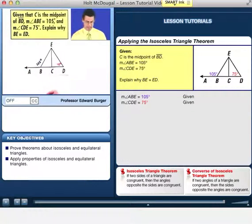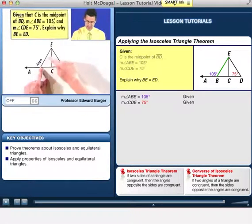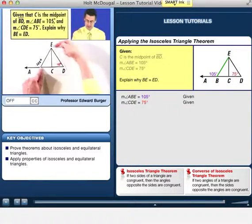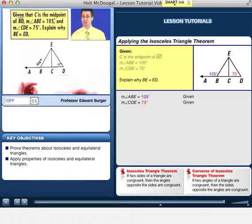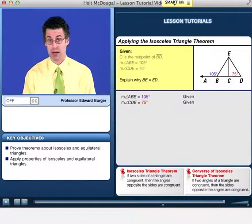And now we're supposed to give a justification for why we know for certain that, in fact, BE, that length, is equal to ED, that length. Why are these two lengths the same? And it's not just a matter of looking at the picture and saying they look the same. We need to explain mathematically why.